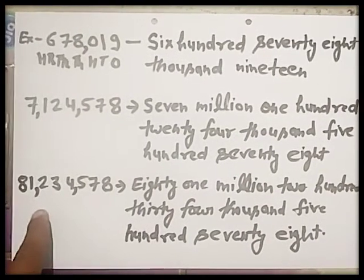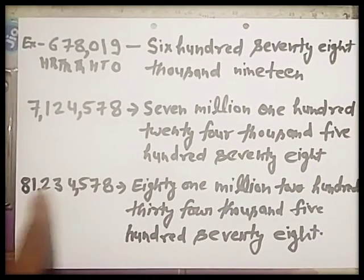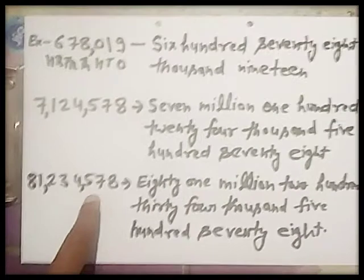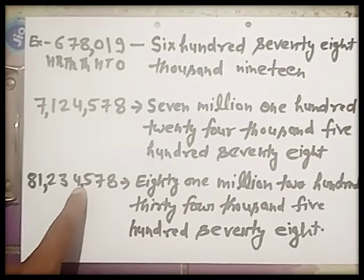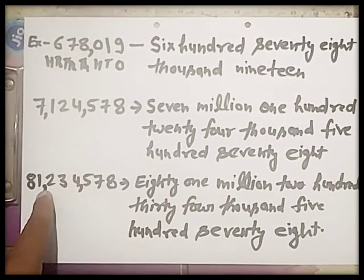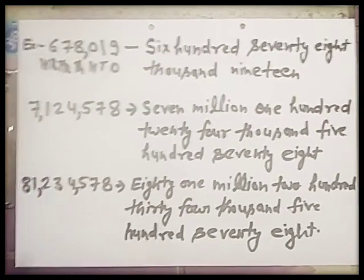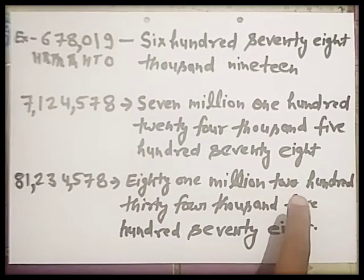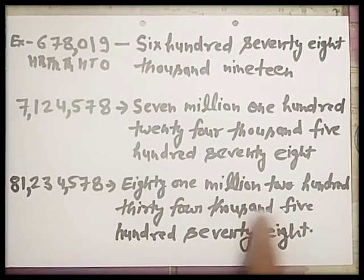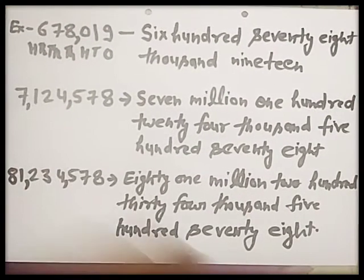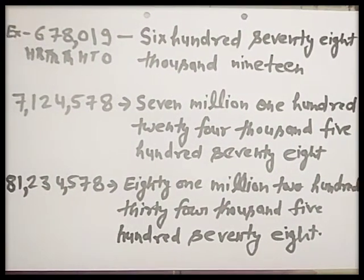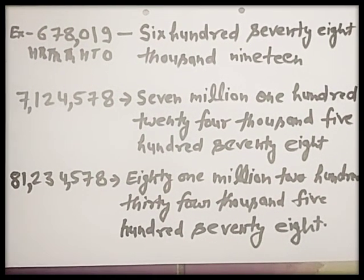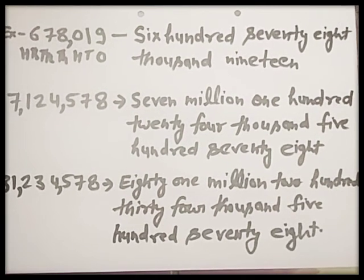Next example: 81,234,578. Again, put a comma after every 3 digits from right to left: 1, 2, 3 — comma; then 1, 2, 3 — comma; then 1, 2. So it is 81,234,578. In this way, you can write number names using the international place value chart.